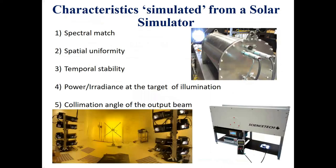So to sum up, what makes a solar simulator different from a light source is its ability to mimic solar light. There are a few main characteristics that we must consider, and these characteristics are standardized for different testing applications. The solar simulator should be able to produce a close match to the sun's spectrum. It should produce a spatially uniform area of illumination, just as the sun does. It should also produce a steady output over a standardized period of time. Optionally, the simulator should be able to give the same power density at the illumination area as the sun. Some applications require the light beam to be highly collimated, so our solar simulators can produce such illumination as well. Let's look at these characteristics in detail.